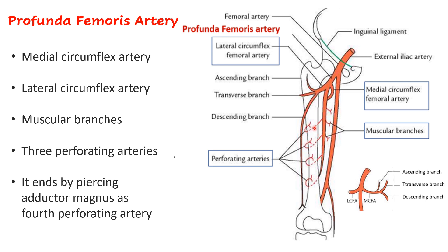When they wind around, the perforating arteries give ascending and descending branches. To summarize, the four main branches of the profunda femoris artery are: medial circumflex femoral, lateral circumflex femoral, muscular branches, and four perforating branches.